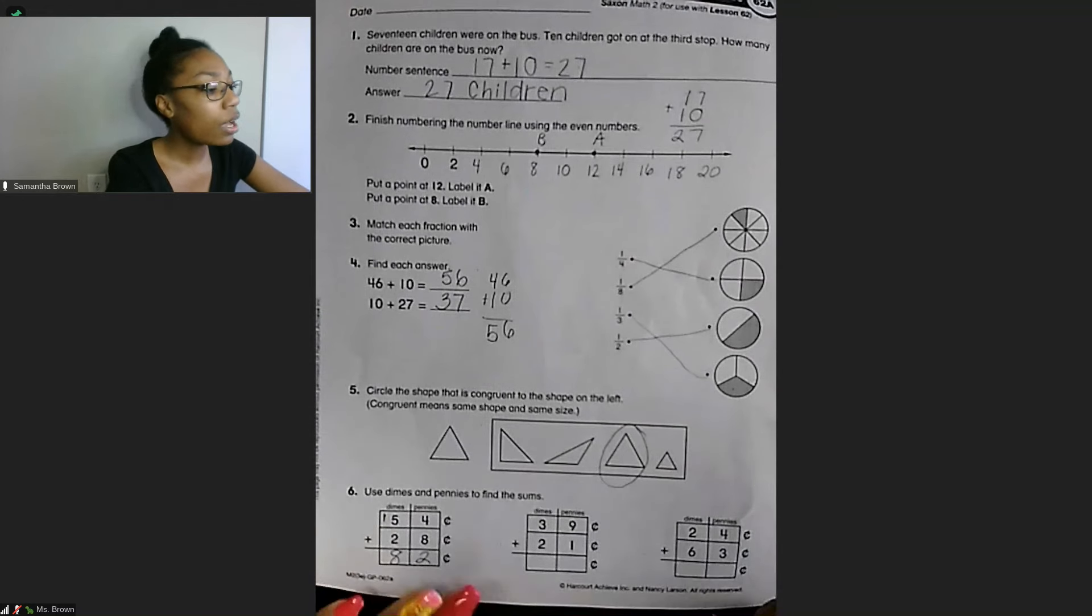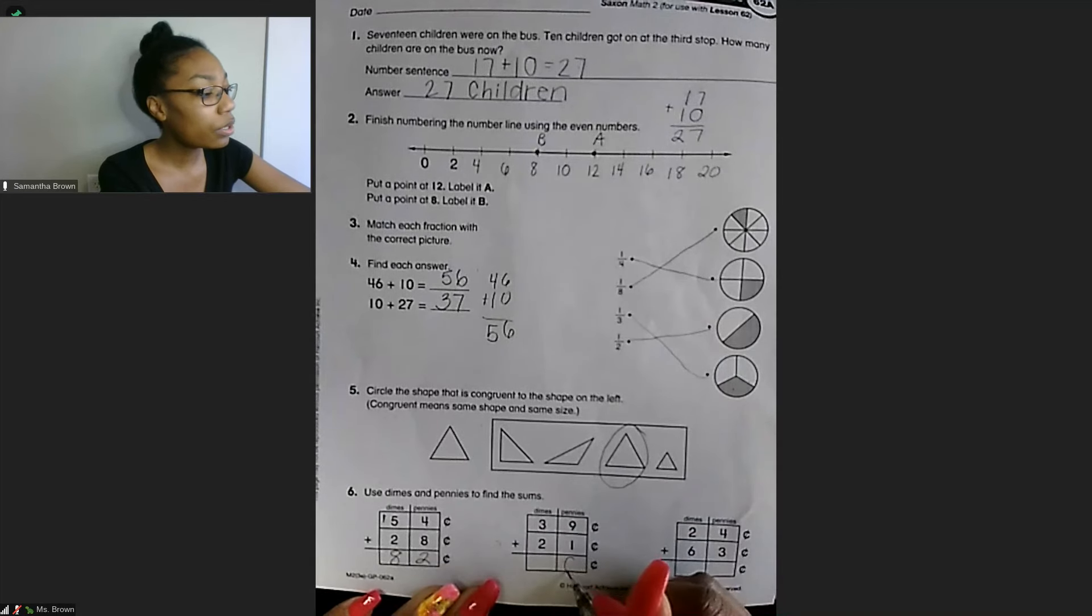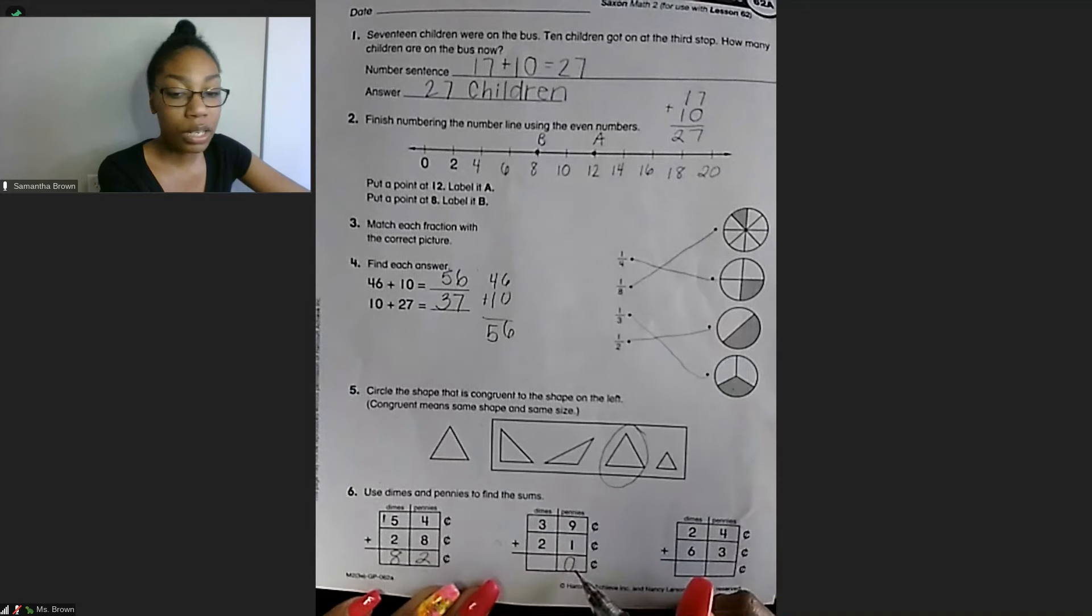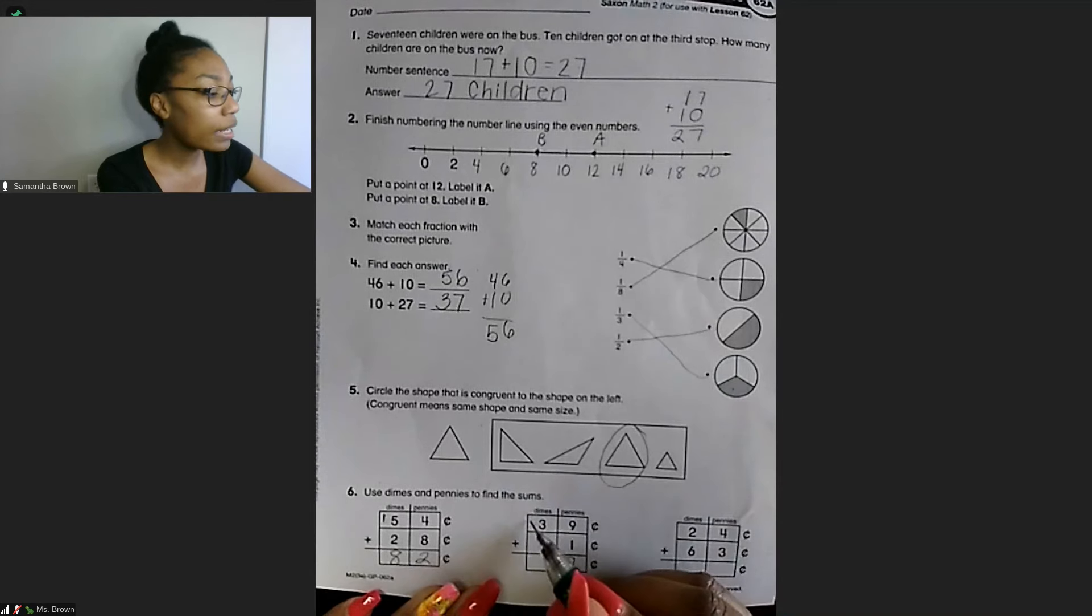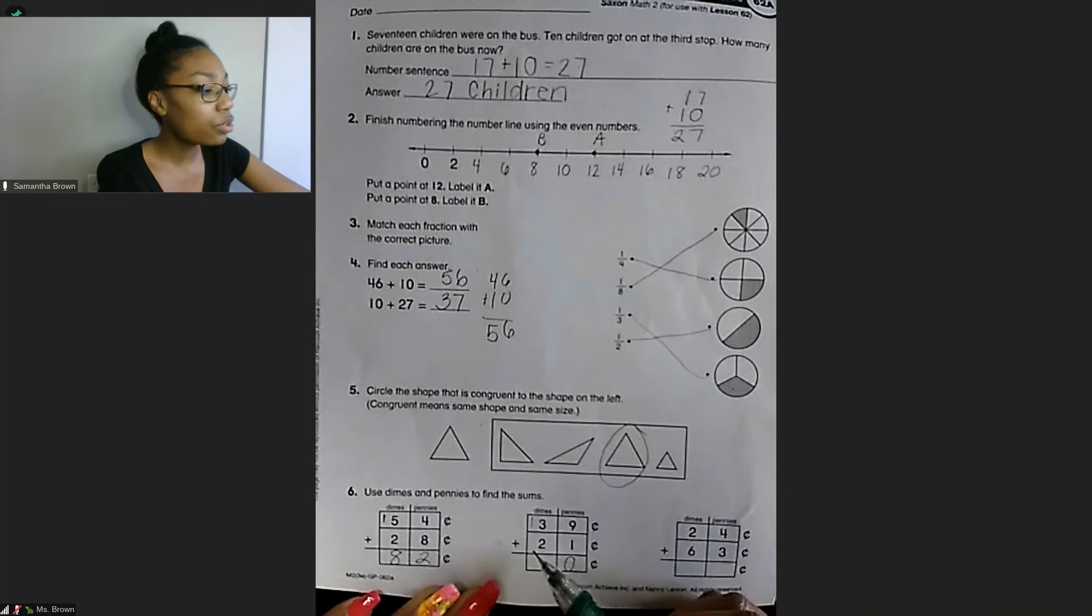Next one. 39 cents plus 21 cents. We have 9 plus 1 equals 10. And then we put our 0 here. We go to the next column and we add our 1. Sorry for the background noise, guys. And then we have 3 plus 2 equals 5. We need to add back in that 1 to get 6.